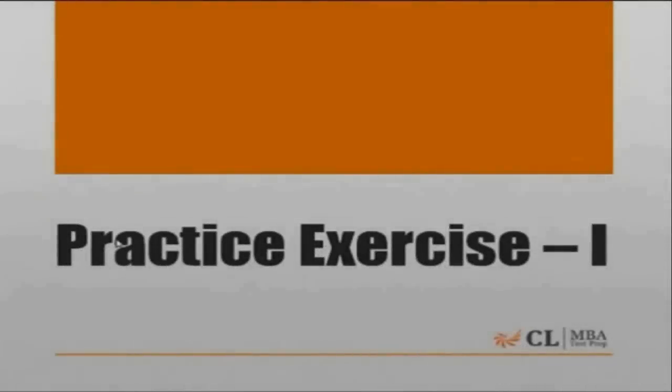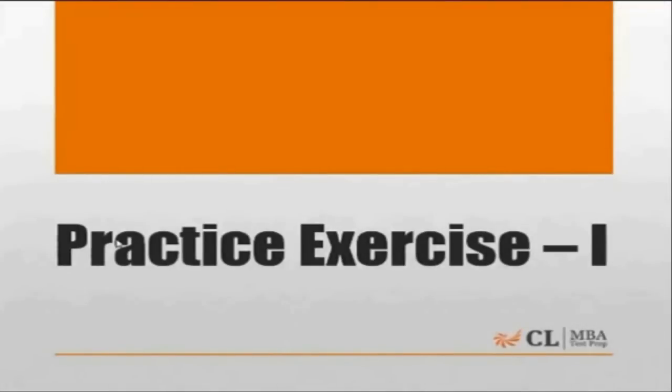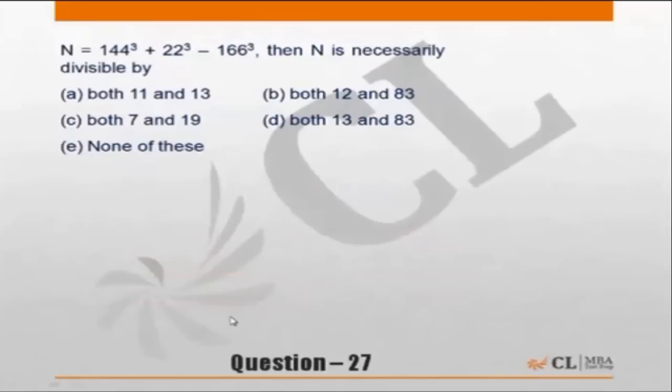Let us start with the first exercise of the number system and set theory chapter. Question 27: N equals 144 cube plus 22 cube minus 166 cube. Then N is necessarily divisible by which of these.